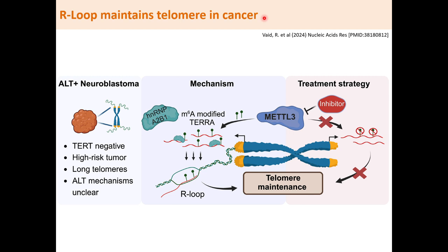Telomere maintenance is required in cancer cell proliferation. Alternative telomere lengthening (ALT) is a way of keeping telomere length in cancer cells without depending on telomerase activity. In ALT-positive, telomerase-negative aggressive neuroblastoma, lincRNA TERRA expressed in telomeres is heavily m6A-modified. The m6A-modified lincRNA TERRA can form R-loops, which are required for telomere lengthening. Drug inhibition of m6A writer protein METTL3 blocks m6A methylation, suppresses R-loop formation, causing telomere damage and reduced cancer cell viability. Thus, METTL3 inhibitor could be a new neuroblastoma treatment strategy via telomere R-loops.